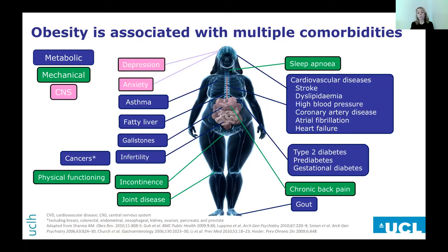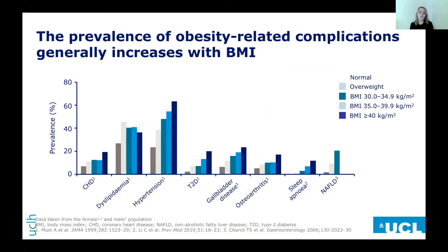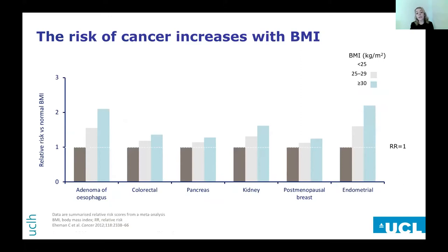There's a dose-response relationship between obesity-related complications and body mass index. As BMI goes up, the prevalence of coronary heart disease, hypertension, type 2 diabetes, and fatty liver also go up. If we look at obesity-associated cancers, again as BMI increases the risk of these cancers also increases. Note this slide is only showing BMI up to 30 — so as we go from BMI 25 to 30, the risk of these obesity-related cancers increases.